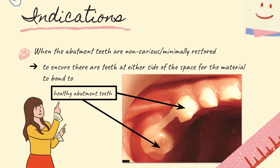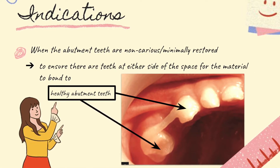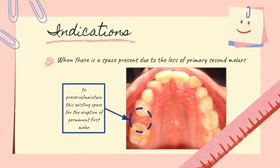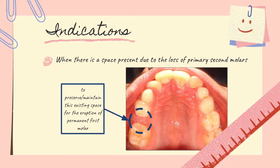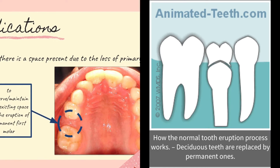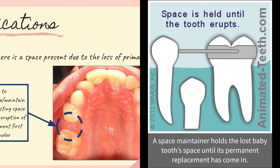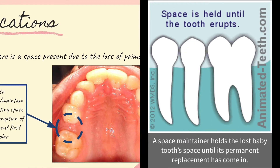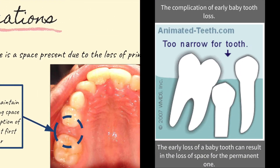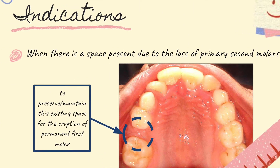This adhesion mechanism is the same as the principle behind adhesive composite placement. For the second indication, GFRCR is indicated when there is a space present due to loss of the primary second molar. This ensures that the space is maintained so that the first permanent molar erupts in a correct manner. Otherwise, complications such as mesial migration, space loss, and reduction in arch length are likely to occur.